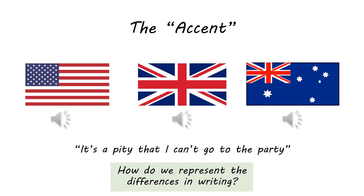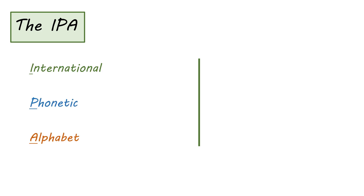We need some way to represent the differences between those dialects in writing. We need some phonetic system to write down those differences in pronunciations. In linguistics, when we want to write down the pronunciation of anything anyone says, we use a system called the IPA — the International Phonetic Alphabet. It's essentially a way of writing that lets you write each sound with a single symbol.